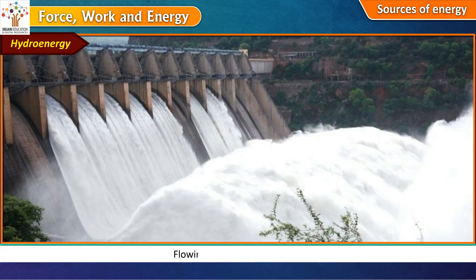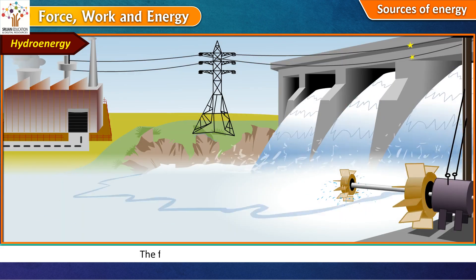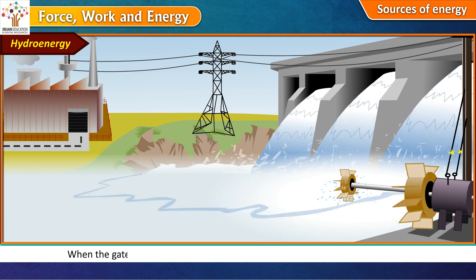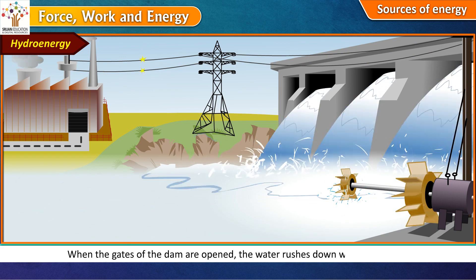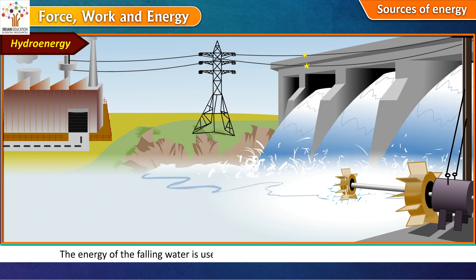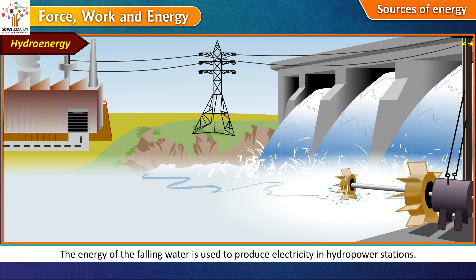Hydro energy. Flowing water has energy in it. The energy of flowing water is called hydro energy. This energy can be used to do work. The flowing water of a river is stored in a dam. When the gates of the dam are opened, the water rushes down with great force. The energy of the falling water is used to produce electricity in hydropower stations.